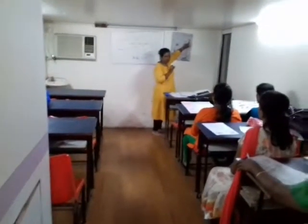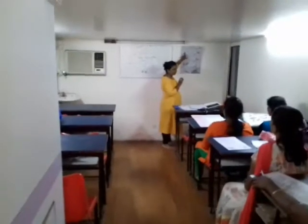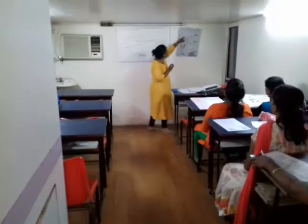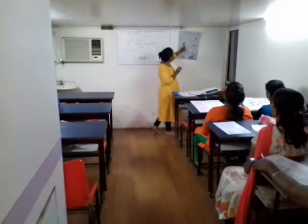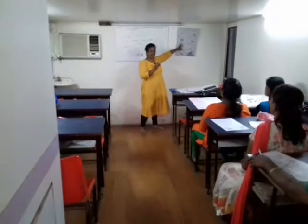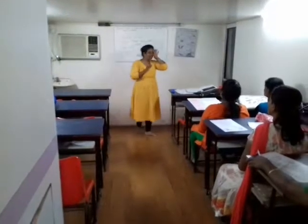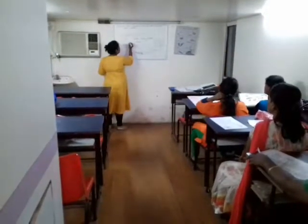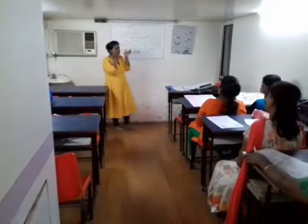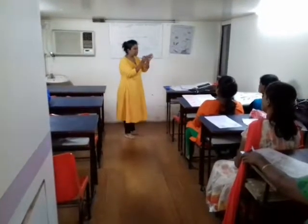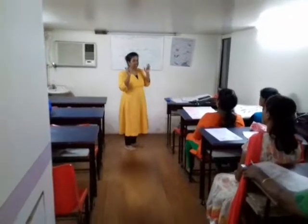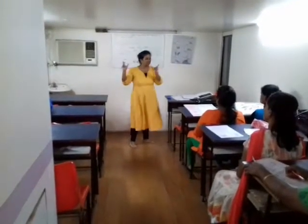Whose beak is this? Parrot. Yes. Whose beak is this? Duck's. Here we have the next part which comes on the head - these are the eyes. Whose eyes? Owls - very bright and big. Here is E-Y-E-S. Eyes. They come on either side of the head and it helps the bird to see everywhere around.